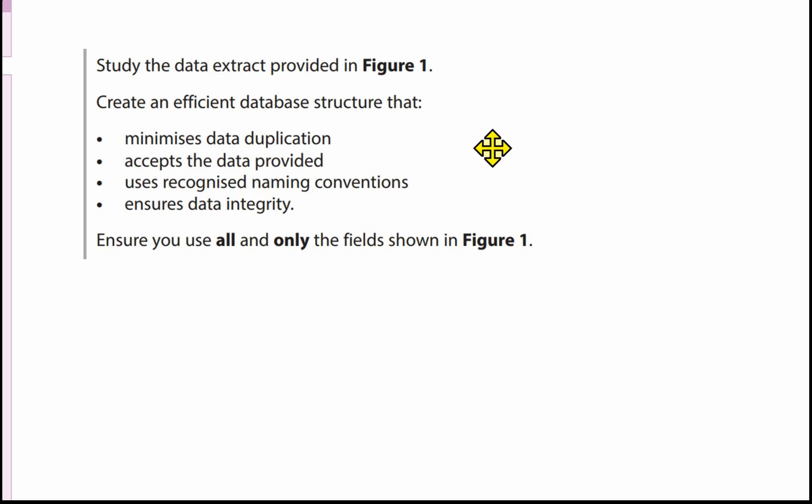Let's just go through what this means. Minimised data duplication means we've got normalised data — in a relational database we're storing data in just one place only, with the exception of foreign keys, and those are copies of primary keys that are there to make the relationships between the tables. Accepting the data provided means we need to be careful with the data types we use and make sure they're appropriate for the sample data provided.